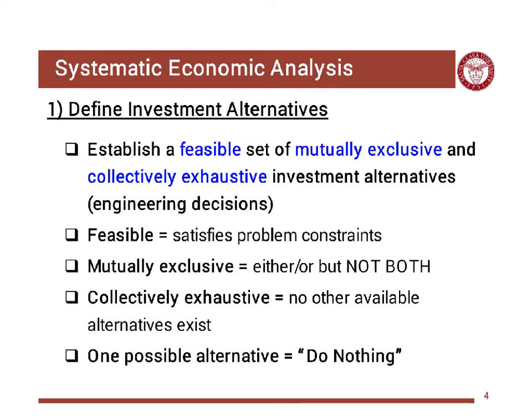Mutually exclusive means there is no overlap between the alternatives, and together they represent the whole set of possible alternatives. So if one of the alternatives is a mix of two others, you need to combine those two and include that as an additional alternative in your design or analysis. These are the conditions to define an alternative for a design or engineering problem.